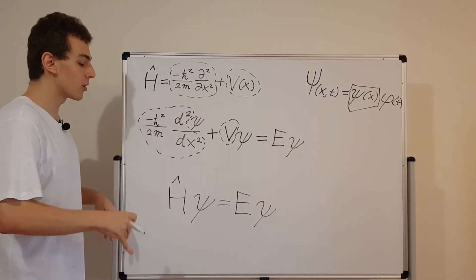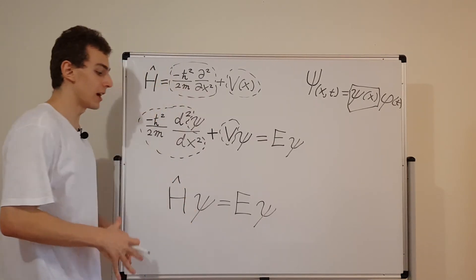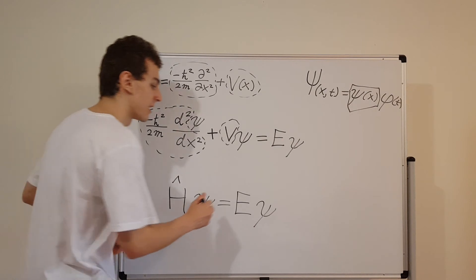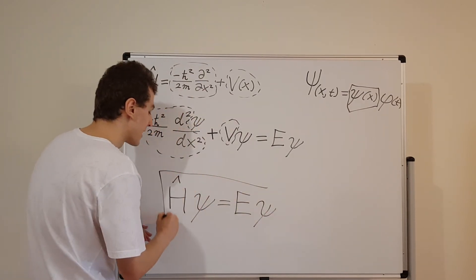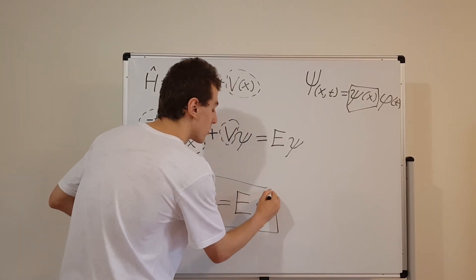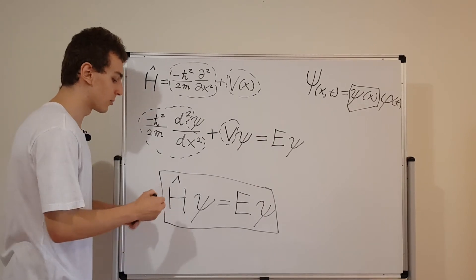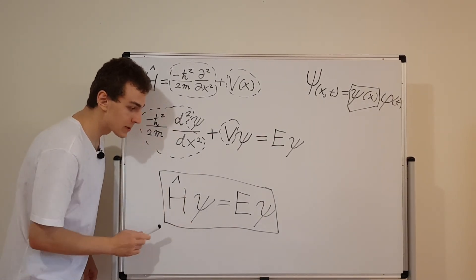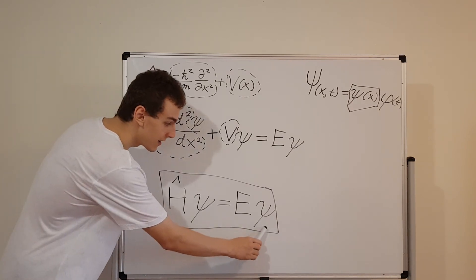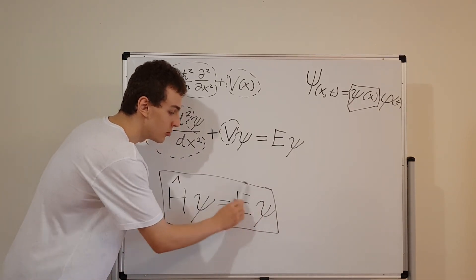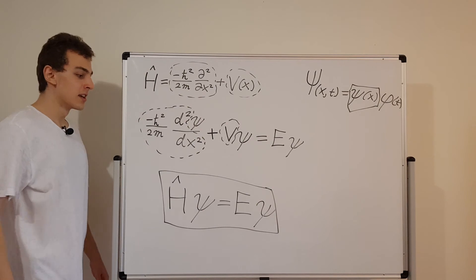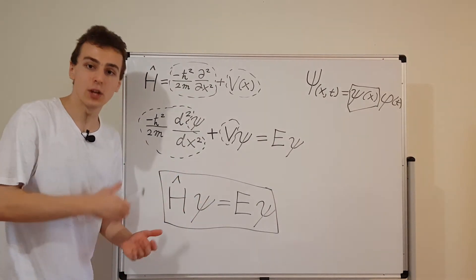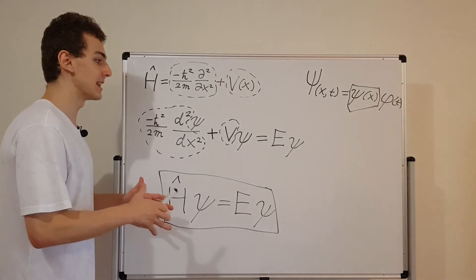We're going to talk in a lot more detail and formally define all of these concepts in later videos in this playlist. But this is the takeaway message: this is the time independent Schrödinger equation written in terms of the Hamiltonian operator — an operator acting on psi giving us back psi with an eigenvalue constant out the front. If the terms eigenvector and eigenvalue don't fully make sense yet, they will if you keep watching the later videos in this playlist.